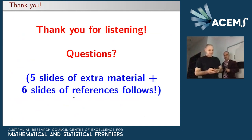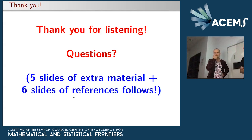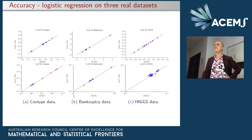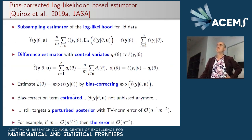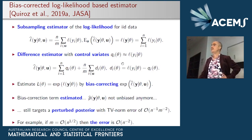Question from Aline: does this work for multimodal or non-Gaussian posteriors? The answer is that everything depends on having a good control variate. In the papers we use a quadratic approximation, which won't work for multimodal posteriors. However, we have ongoing work on improving control variates for more complicated models — with better control variates, I believe it can work.